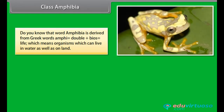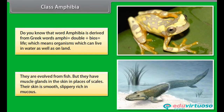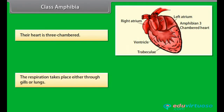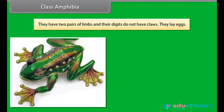Class Amphibia. The word Amphibia is derived from Greek words amphi, meaning double, plus bios, meaning life — organisms which can live in water as well as on land. They are evolved from fish but have mucous glands in the skin in place of scales. Their skin is smooth, slippery, and rich in mucus. Their heart is three-chambered. Respiration takes place either through gills or lungs. They have two pairs of limbs and their digits do not have claws.